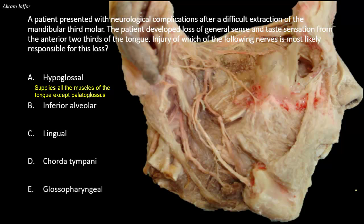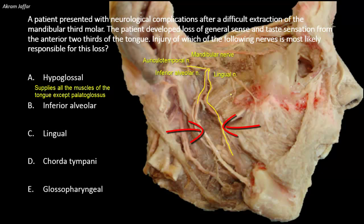The second point we need to remember is about the branches of the mandibular nerve in the infratemporal fossa. This is a dissection of the infratemporal fossa, and the main nerve here is the mandibular nerve. The mandibular nerve has anterior and posterior divisions. We are more concerned about the posterior division, which gives the auriculotemporal nerve going posteriorly, the inferior alveolar nerve, and anterior to it is the lingual nerve.